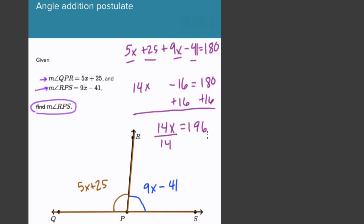And we get 14x equals 196. And 14 squared is 196. So if I divide 196 by 14, I just get 14. Now that's not the answer. They want the measure of RPS. They want the measure of this angle right here. So we substitute or plug in x, and that'll give us our answer.